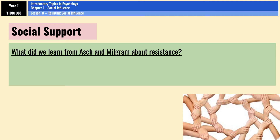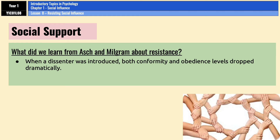We've already learned something about resistance from research already covered in Social Influence — specifically Asch and Milgram. In Asch's unanimity variation, conformity rates dropped to as low as 5.5% when a non-conforming confederate was introduced. Milgram did a similar variation where the teachers were paired with one of them being a dissenter who would eventually refuse to continue, and obedience rates dropped to around 10%.